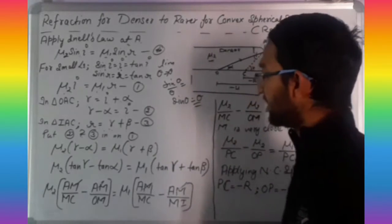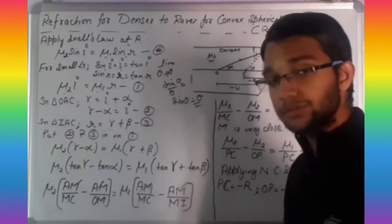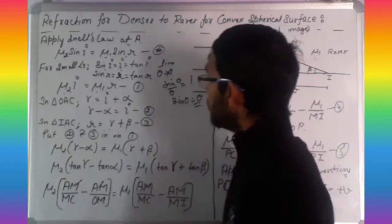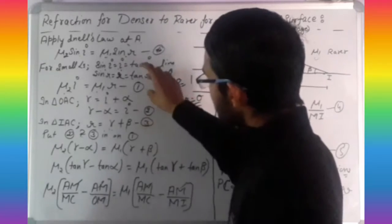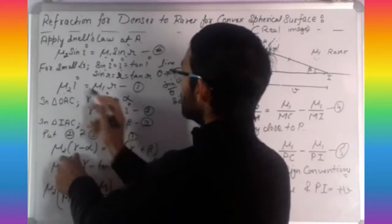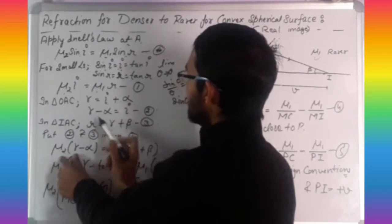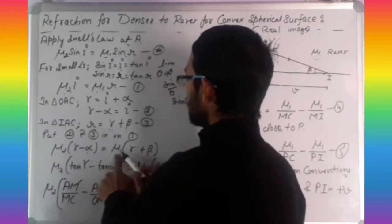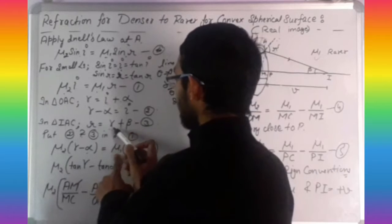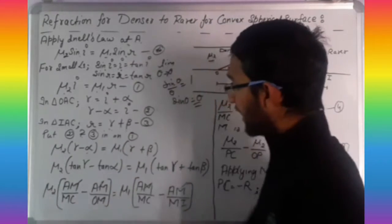Now substitute equations two and three into equation one. Where i appears, substitute gamma minus alpha; where R appears, substitute gamma plus beta. So we get: mu2 times (gamma minus alpha) equals mu1 times (gamma plus beta).